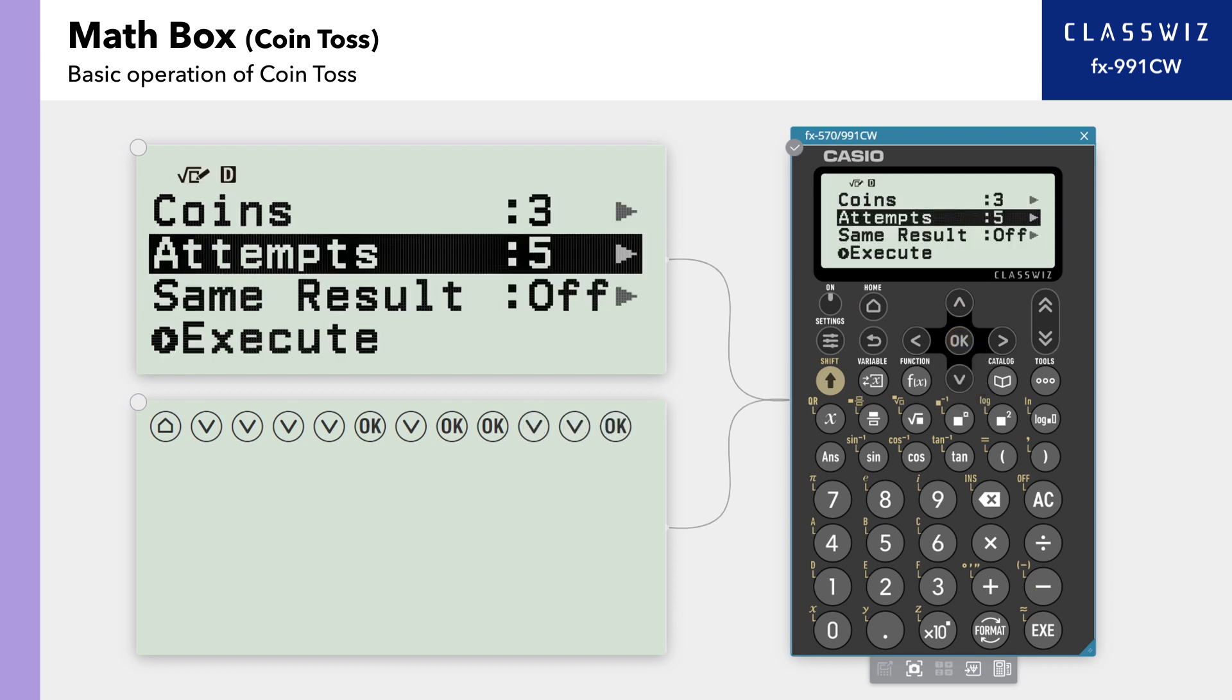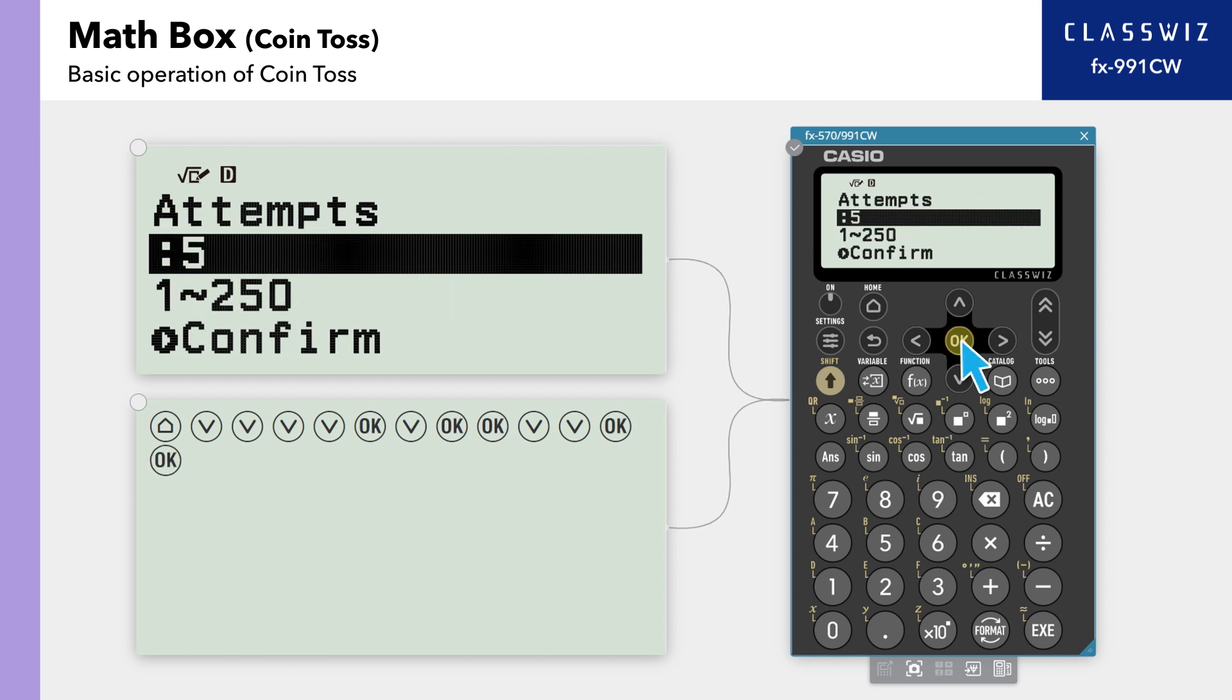For attempts, choose how many times to toss the coins. You can choose a value from 1 to 250. In this example, let's enter 250.